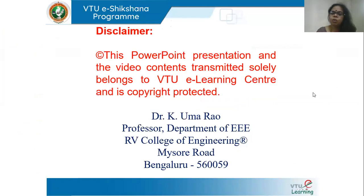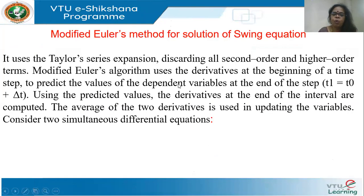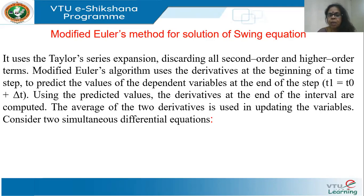In this talk, we will cover the modified Euler's method for solution of the swing equation. We have already seen the Runge-Kutta method, and now we take up the modified Euler's method. We use numerical methods for the solution of the swing equation because it is non-linear. Modified Euler's method is also very simple to program and hence quite popular. Similar to the Runge-Kutta method, it uses a truncated Taylor series expansion, retaining only the first order term and discarding all second order and higher order terms, making computation very simple and fast.